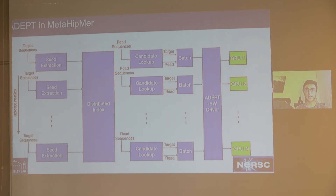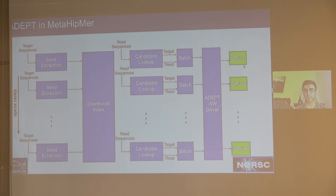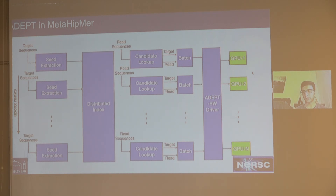We integrated ADEPT into MetaHipMer, our metagenome assembly pipeline. MetaHipMer is implemented using UPC++, and we try to maximize node utilization by launching as many as 128 ranks per node. With four GPUs per node, all ranks share the GPUs, so there's a lot of GPU contention. ADEPT makes this easy through a software wrapper or driver: you simply make a call to it, it detects all available GPUs and distributes work across them. It's essentially a drop-in replacement for the SSW or SSAM library — you replace your existing calls with ADEPT calls and it handles the rest.